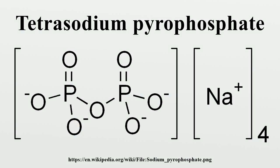Tetrasodium pyrophosphate, also called sodium pyrophosphate, tetrasodium phosphate, or TSPP, is a colorless transparent crystalline chemical compound with the formula Na4P2O7. It is a salt composed of pyrophosphate and sodium ions. Toxicity is approximately twice that of table salt when ingested orally.